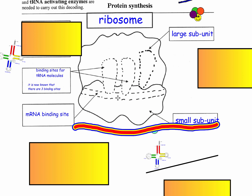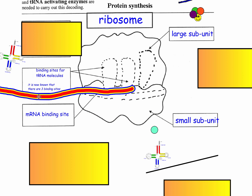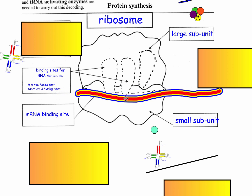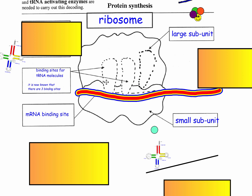There's a binding site for the mRNA, because the mRNA has to fit through like a typewriter. And then you have three binding sites for tRNA molecules. tRNA molecules are very important because they are the ones bringing the amino acids over. These three binding sites are called E, P, and A.